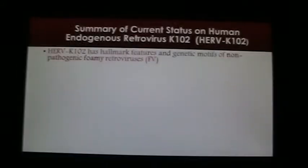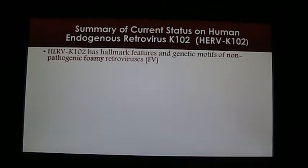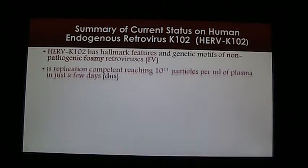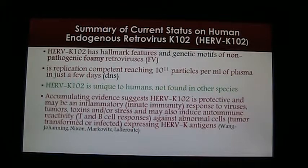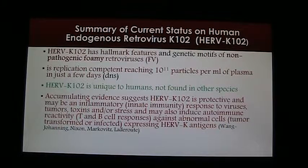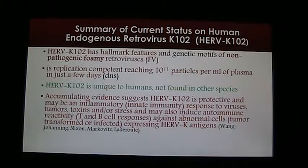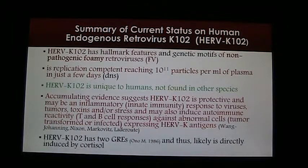In summary, HERVK102 has hallmark features and genetic motifs of non-pathogenic foamy viruses. It is replication-competent, reaching 10 to the 11th particles per ml of plasma in just a few days. HERVK102 is unique to humans, not found in other species. Accumulating evidence suggests HERVK102 is protective and may be an inflammatory innate immunity response to viruses, tumors, toxins, and/or stress, and may also induce autoimmune reactivity — T and B cell responses against abnormal cells that are tumor-transformed or infected with viruses expressing HERVK antigens. HERVK102 has two GREs, glucocorticoid response elements, and thus is likely directly induced by cortisol.